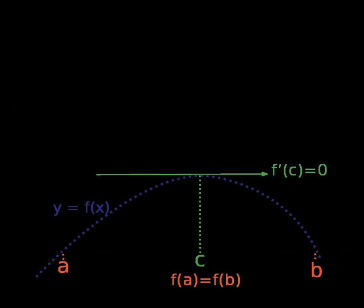By assumption, f is continuous on [a,b], and by the extreme value theorem attains both its maximum and its minimum in [a,b]. If these are both attained at the endpoints of [a,b], then f is constant on [a,b] and so the derivative of f is zero at every point in (a,b).